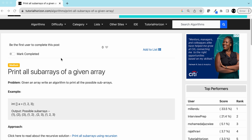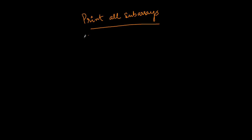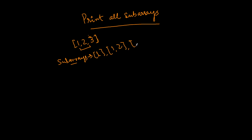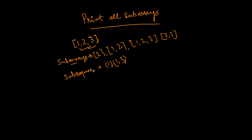Don't confuse sub-arrays with subsequences. A subsequence is a part of an array where the elements are not necessarily continuous. For example, with array [1, 2, 3], the sub-arrays are the continuous parts: [1], [1,2], [1,2,3], [2,3]. But [1,3] is not a sub-array — it is a subsequence.